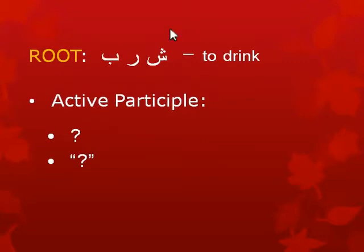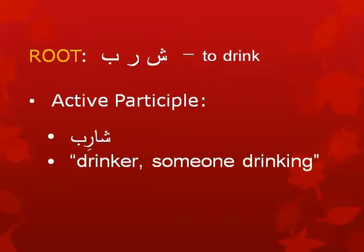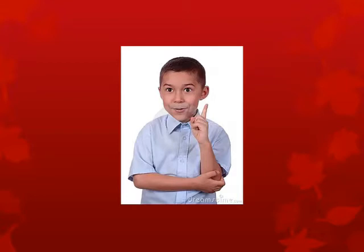Let's take one more. Sharaba means to drink. The active participle will be sharib — like katib, fa'il, daris, talib — the same rhythm, always the same rhythm. It means a drinker, or someone who is in the process of drinking. So that was the active participle — the doer. You feel very good about those.